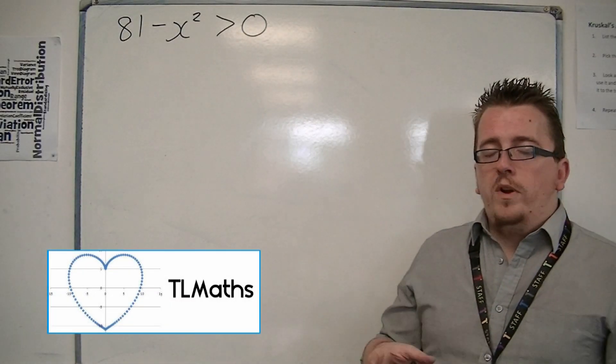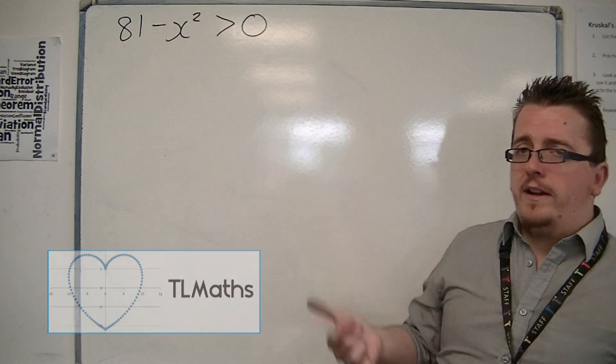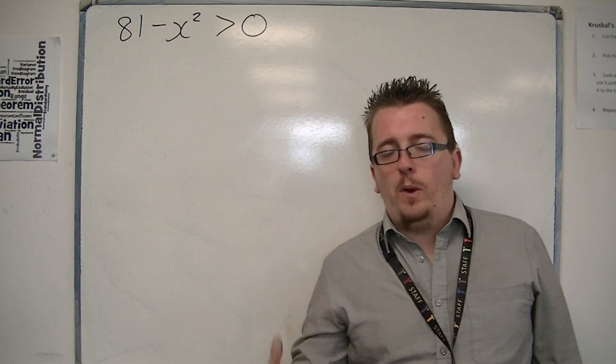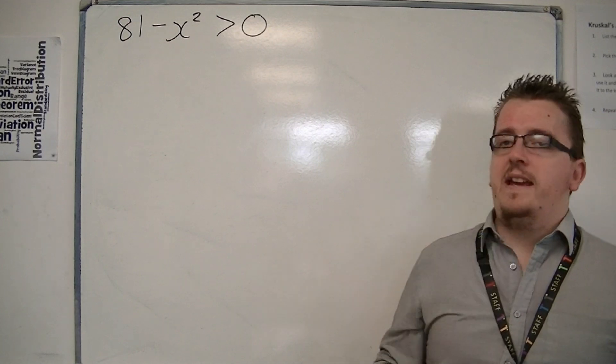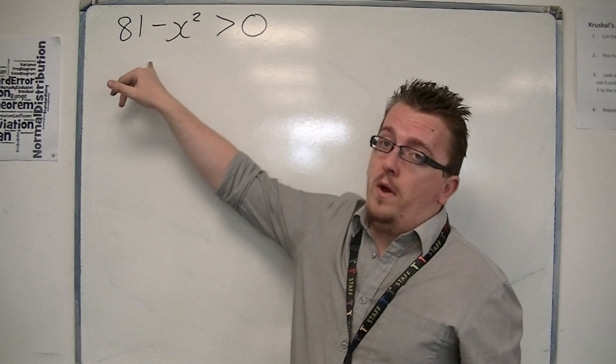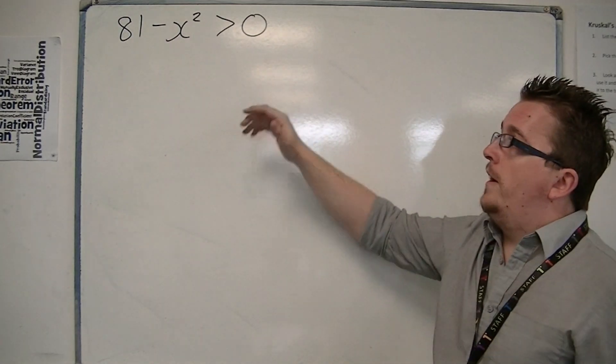Now in this video, what we're going to be looking at is a quadratic inequality where the number in front of the x squared, the coefficient of x squared, is negative. So in this example we have a coefficient of minus 1. 81 minus x squared is greater than 0.